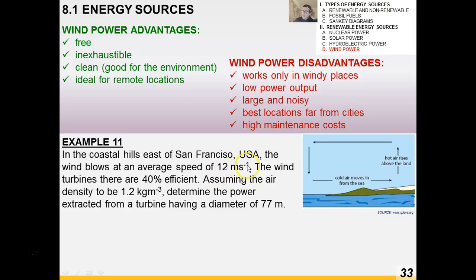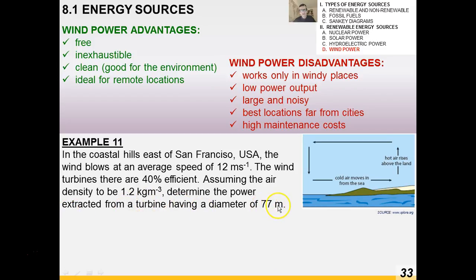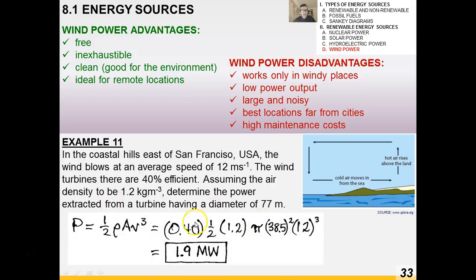Example near San Francisco: wind blows at an average speed of 12 m/s. San Francisco is windy because hot air rises above land in summer and cold air moves in from the sea — making the Golden Gate area very windy. Turbines there are 40% efficient, air density is 1.2 kg/m³. For a turbine with diameter 77 m, area = π(38.5)², applying P = ½ρAv³ × efficiency gives about 1.9 megawatts.